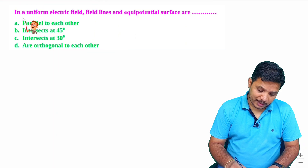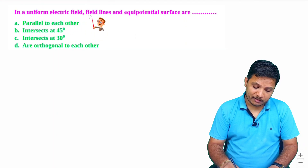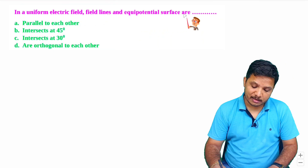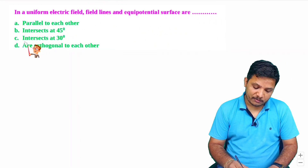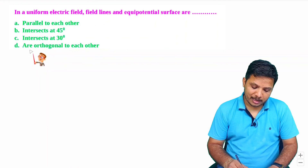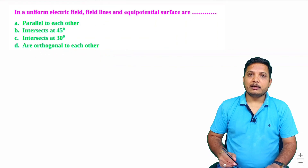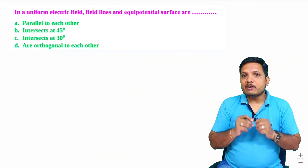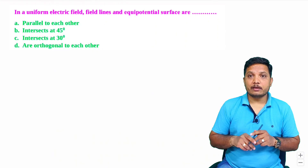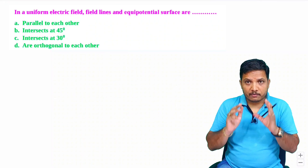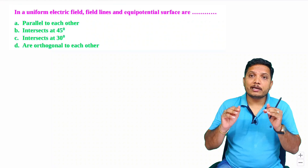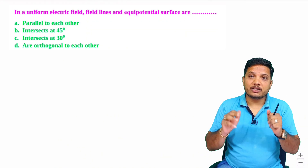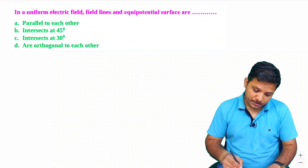Let us have one more interesting question. In a uniform electric field, are field lines and equipotential surfaces parallel to each other, intersecting at 45 degrees, intersecting at 30 degrees, or orthogonal to each other? This is a very basic question. Equipotential surfaces and the electric field should always be orthogonal to each other. So our answer is that they are orthogonal.